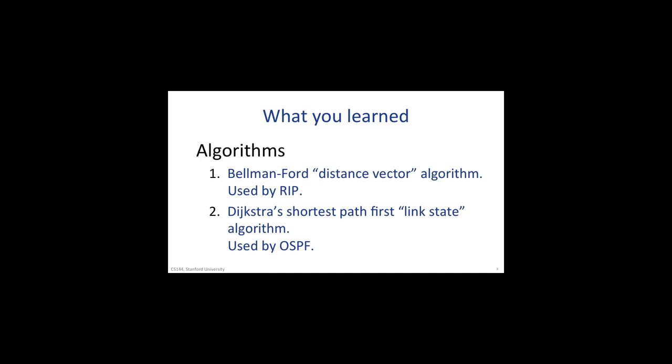The first is the Bellman-Ford algorithm, which is usually referred to as a distance vector algorithm. Each router constructs a vector of distances from itself to every other router in the network. In successive steps, the routers exchange their vectors so as to find the neighbor that is closest to each destination. After a number of iterations, equal to no more than the longest loop-free path in the topology, the algorithm will settle on a set of forwarding tables in each router that tells it how to route packets along the shortest path to every destination.